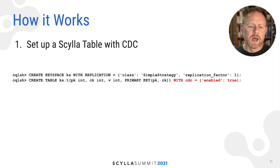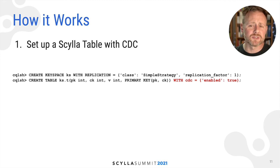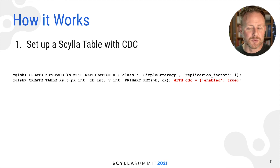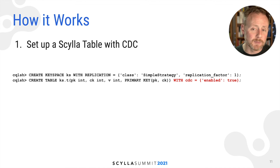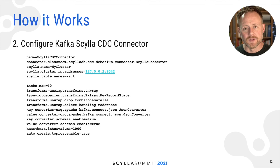Let's look at some code. I'm going to create a keyspace — simple replication strategy, replication factor one, because it's a demo. Create a table called T with a few columns, and note the important part: CDC equals enabled true. That means I want a CDC table to be created automatically on this table.